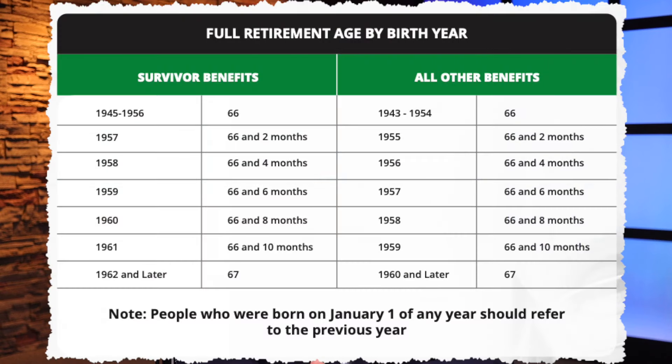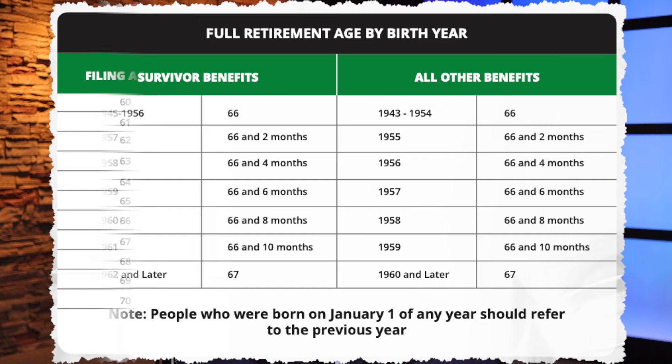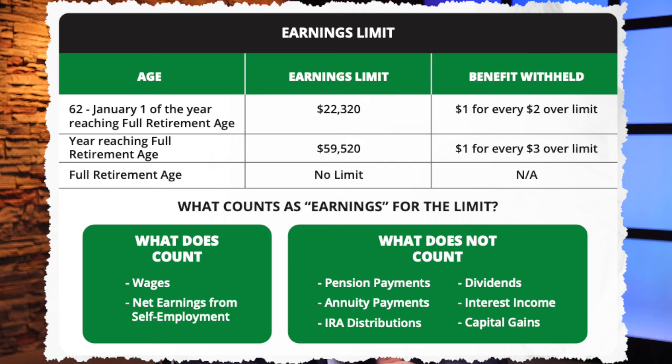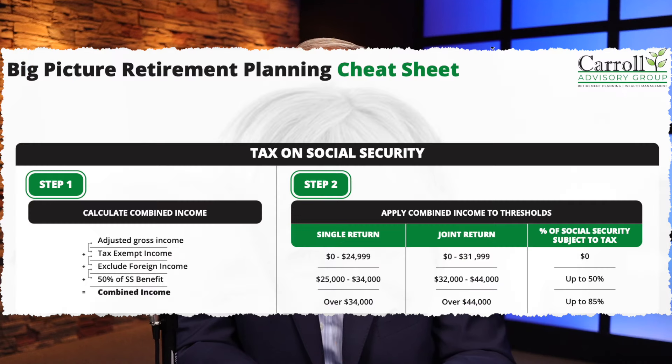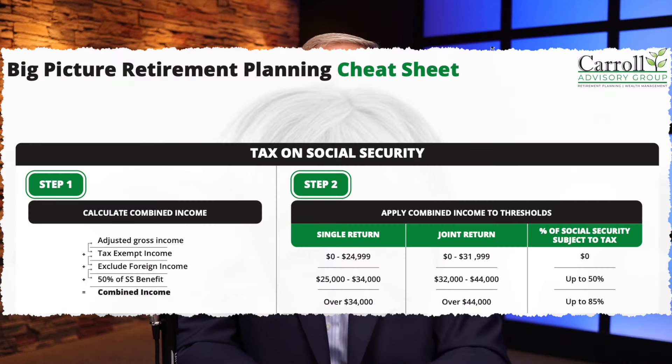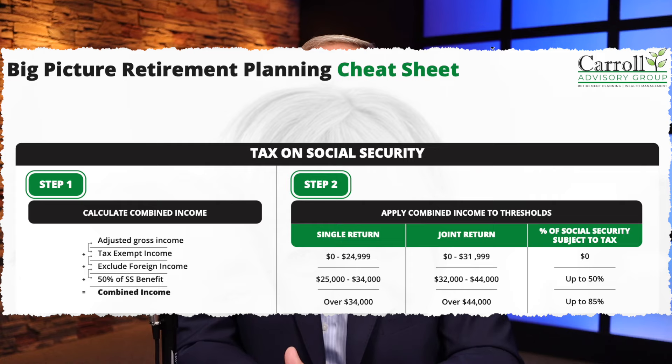As we move on to the second page, this is where the information on Social Security starts. There's a lot to cover here — that's why it's got two pages for itself. You can see the four retirement ages listed by birth year, the age-based reductions and increases for your own benefit, for spousal benefits, and survivor benefits, the current year earnings limit along with a description of what is and what is not counted, the spousal benefit formula, an entire section on how taxes on Social Security benefits work, and a lot of other stuff on Social Security. Those are the high points of what's included, but there are a few other things not covered here that you'll likely find to be very useful and interesting.